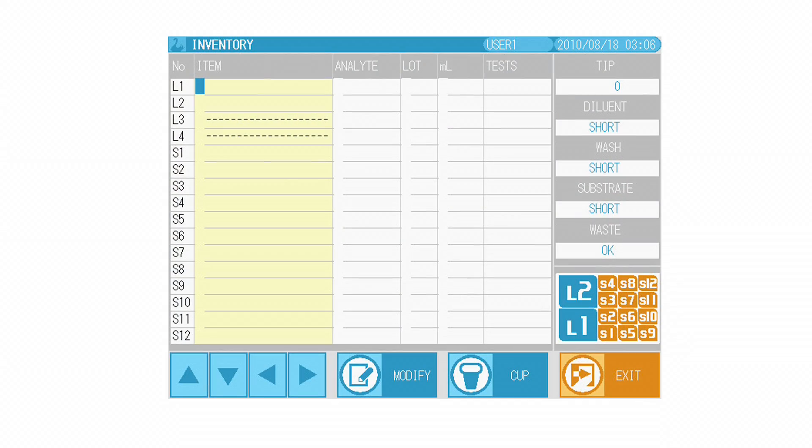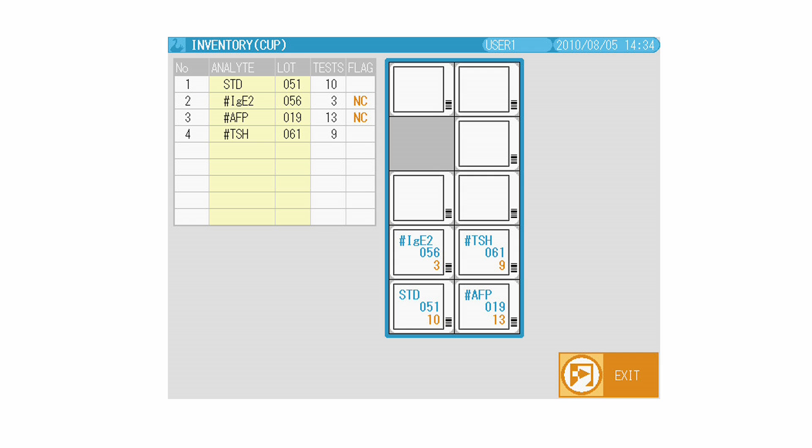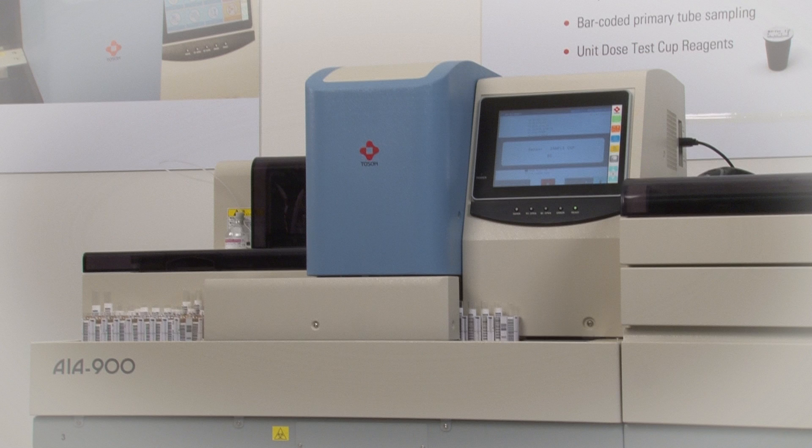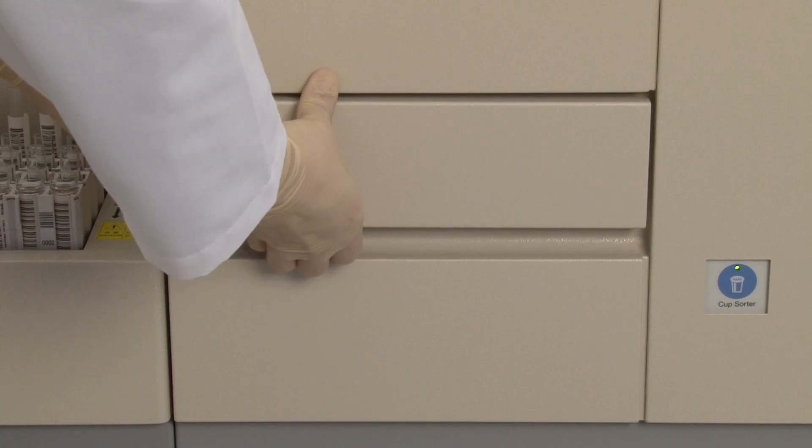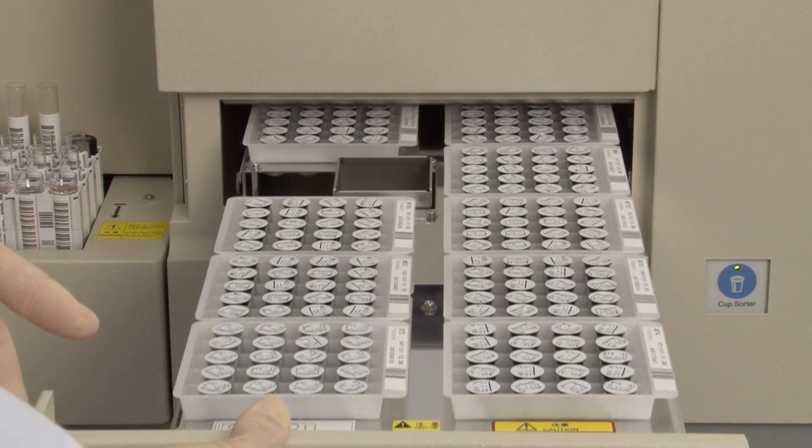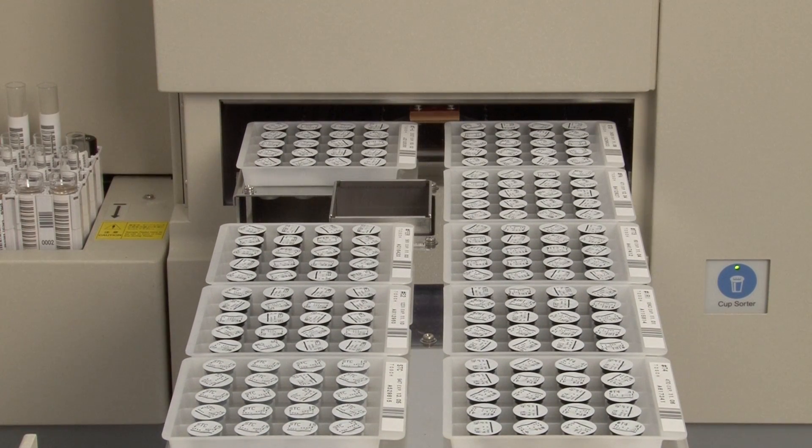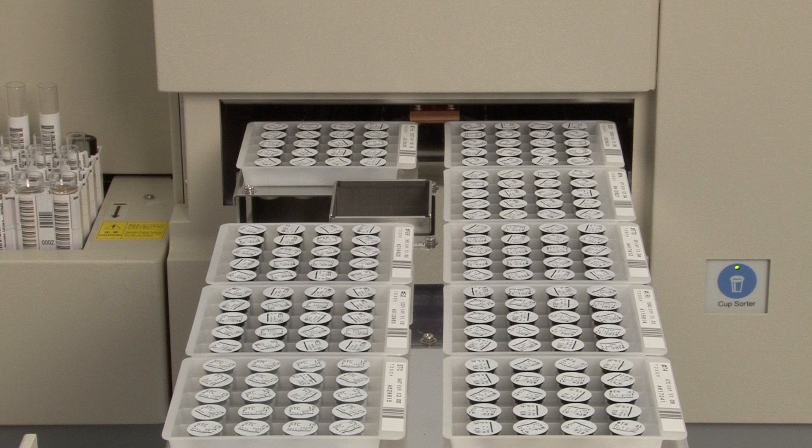Color coding on the reagent inventory screen indicates whether or not the lot number on board is calibrated. If workload increases or more automation is desired, the reagent tray sorter can be added at any time without having to perform additional method validations.